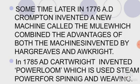Sometime later in 1776, Crompton invented a new machine called the Mule, which combined the advantages of both the machines invented by Hargreaves and Arkwright. In 1785, Cartwright invented the power loom, which used steam power for spinning and weaving. This is how the different inventions that took place in this century helped in the growth of industries in England.